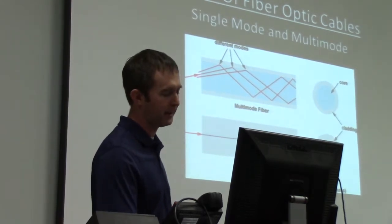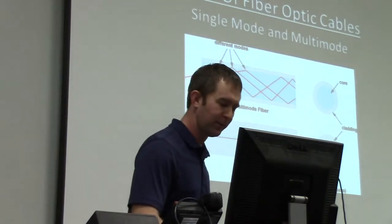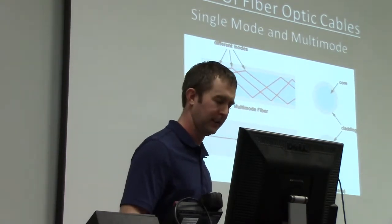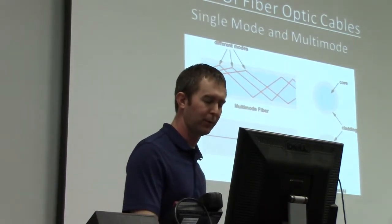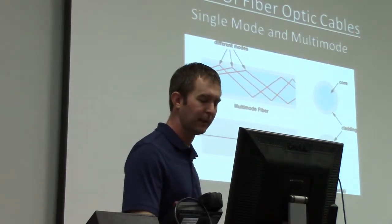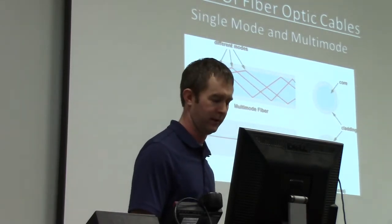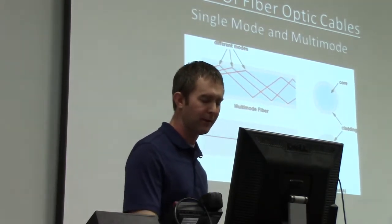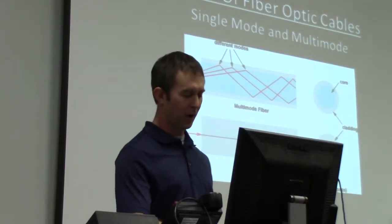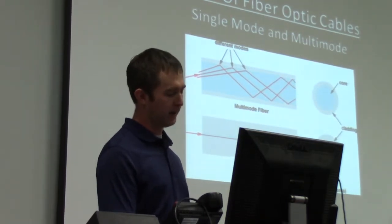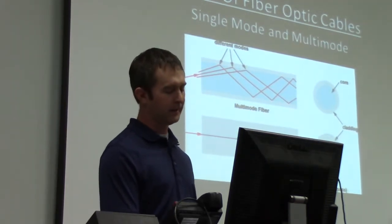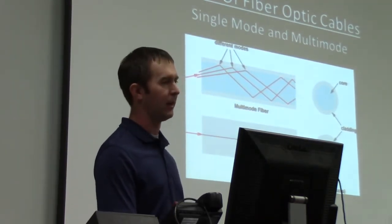The second type of fiber optic cabling is called multimode. Multimode fiber transmits data using multiple rays of light, with each mode transmitted at a slightly different frequency. By doing this, you can split the channel and transmit multiple signals at the same time. Multimode fiber is much thicker than single mode, typically between 50 and 100 microns in diameter. The cladding surrounding the inner core is designed to reflect the light of each frequency at a different angle to keep the signal in the cable and the data intact.